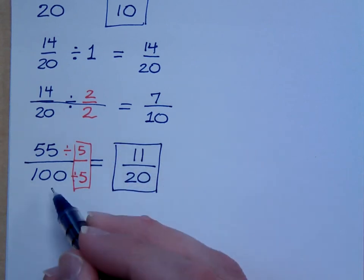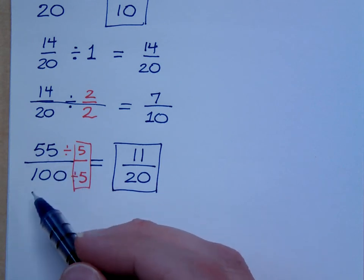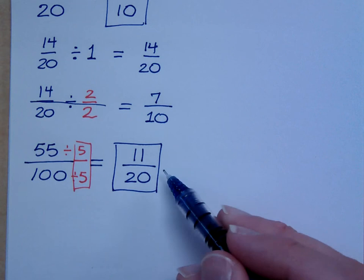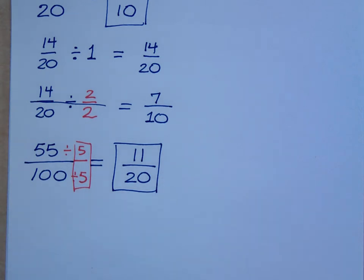And this right here is one of the reasons I have a hard time writing checks. Because if you write a check and it's, oh, 55 cents, I have a hard time not turning that into 11 over 20. That's just, especially if it's 25 over 100.